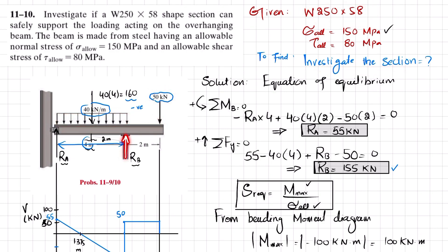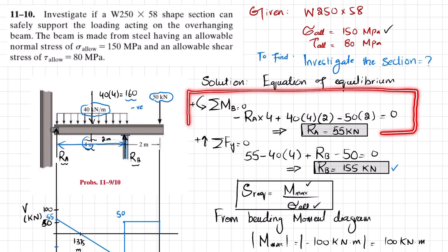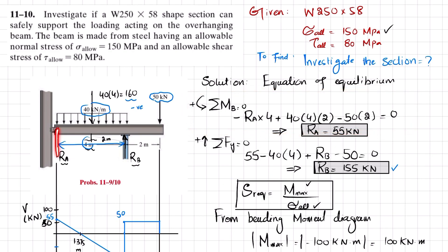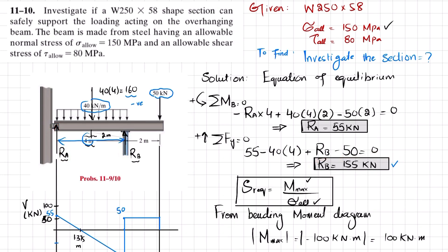The first step is to find the reaction forces by removing each support. I have already done this in problem 11.9, so you can refer to that. Reaction force RA equals 55 kilonewtons while RB equals 155 kilonewtons.